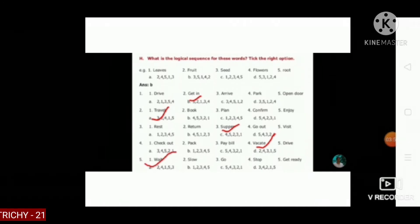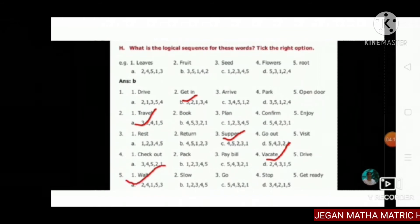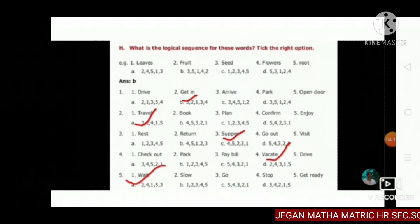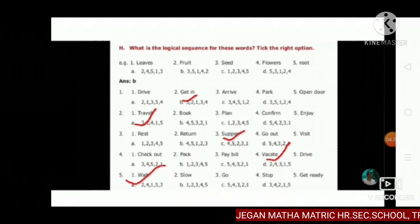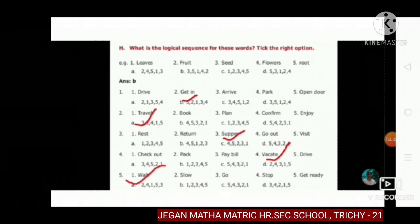What is the logical sequence for these words? Take the right options. First one: leaves, fruit, seed, flowers and root. The answer is: seed, root, leaves, flowers and fruit. That is the logical sequence.